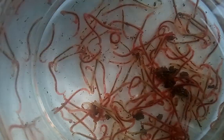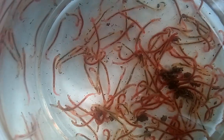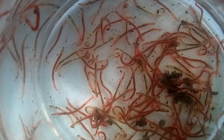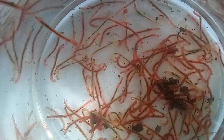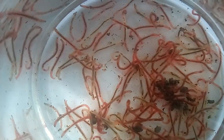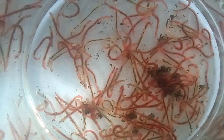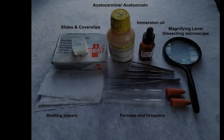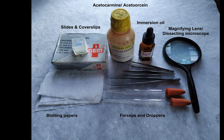In this experiment, we're going to prepare temporary stained slides of polytene chromosomes isolated from the salivary glands of the larval stage of Chironomous insect, also known as the blood worms.